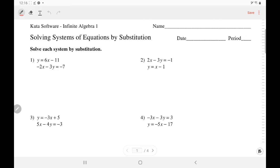All right, so in number one, y is already isolated or solved for. We circle it, makes it easier to come back, and plug that into y of the second equation. So negative 2x minus 3, plug in the 6x minus 11 equals negative 7.